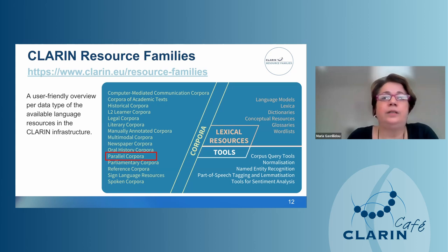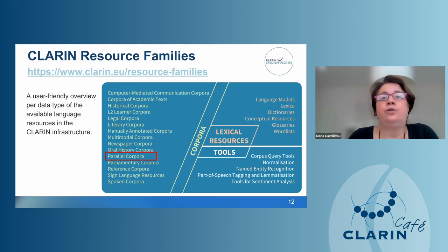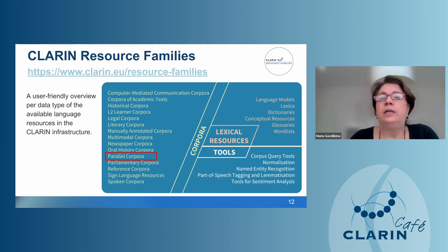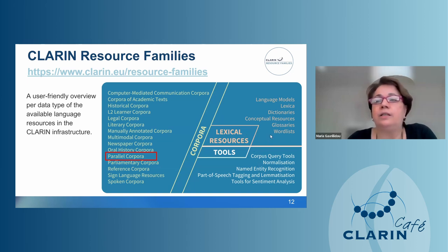An important CLARIN initiative is organizing resources by data type — a user-friendly overview of resource families. All historical corpora, parallel corpora, or newspaper corpora are gathered into families where users can access them. This also applies to lexical resources and tools, for example finding all glossaries or tools for named entity recognition or lemmatization.